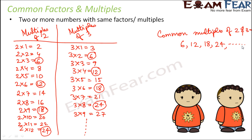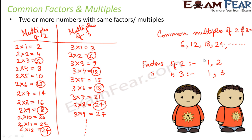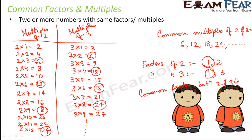Now what about common factors? Do you think that 2 and 3 might have common factors as well? For that, let us write the factors of 2. 2 has two factors: 1 and 2, because 2 is a prime number, so it has two factors — 1 and itself. Similarly, factors of 3 would be 1 and 3. Do you have any common factor? Yes, of course — 1 is a common factor. So 1 is a factor of 2 and also a factor of 3, therefore the common factor between 2 and 3 is 1.